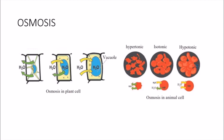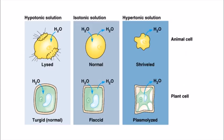This process — water coming in and water leaving out — is all about osmosis. There are three types of solutions in osmosis: hypotonic, isotonic, and hypertonic. In a hypotonic solution, the concentration of water is lesser inside the cell than outside, so water enters the cell. This process is also called endosmosis.